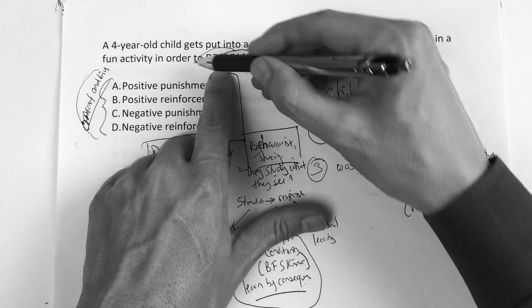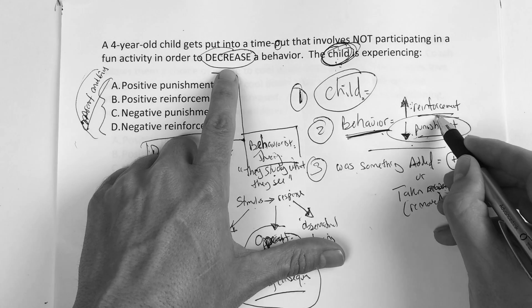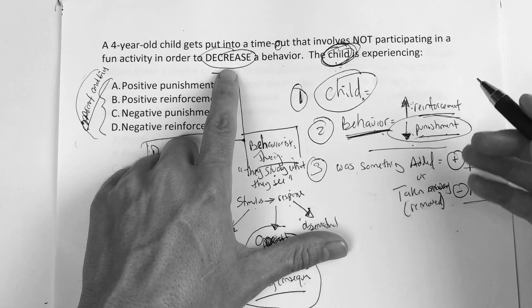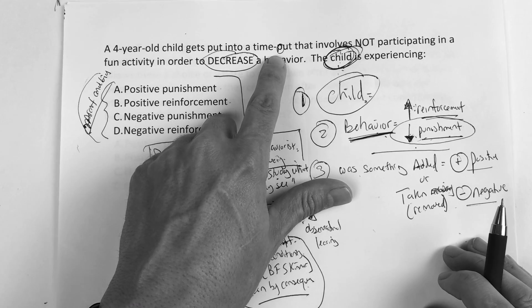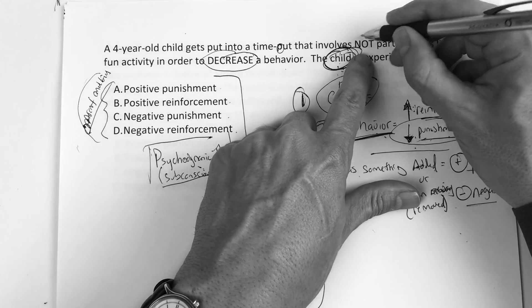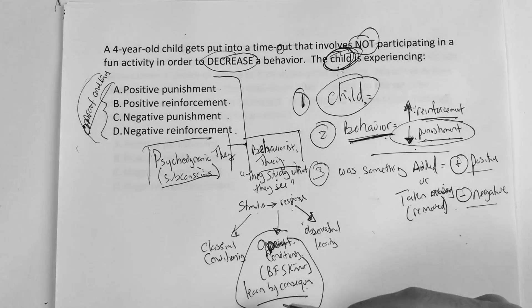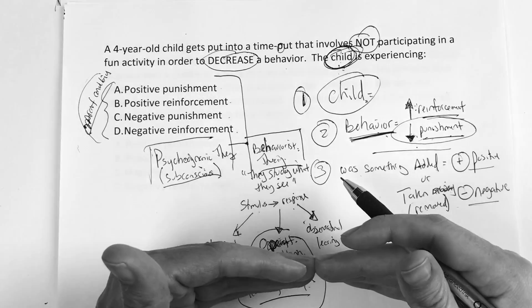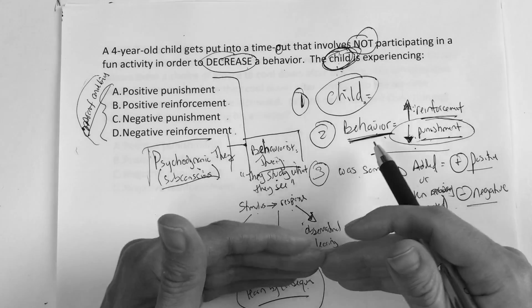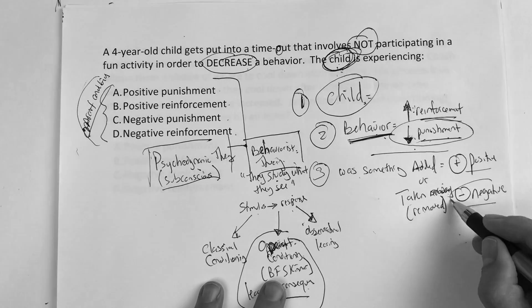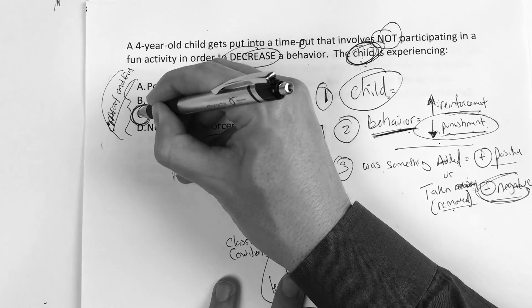So in this situation with the child, they're trying to decrease the behavior, so the behavior was going down. To make that happen, was something added or taken away? Well, the child was put in time out — that involves not participating, so the kid was removed from the other kids. It's not like a punishment was added; the kid was removed. So this would be considered a negative punishment.